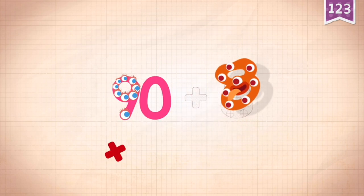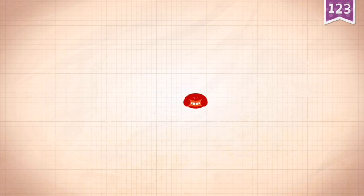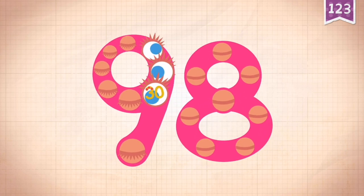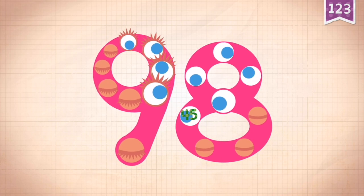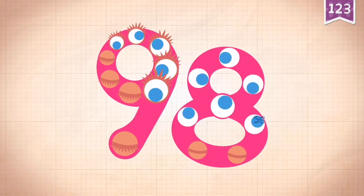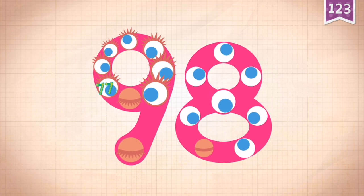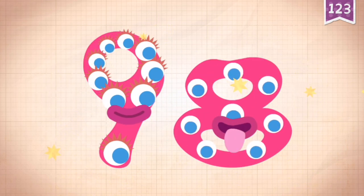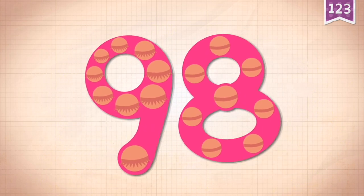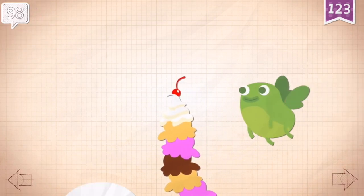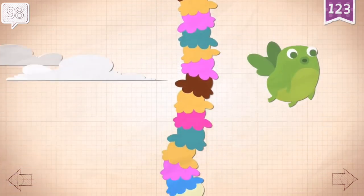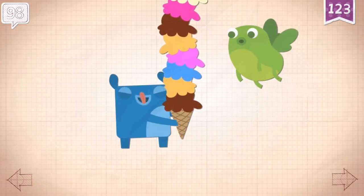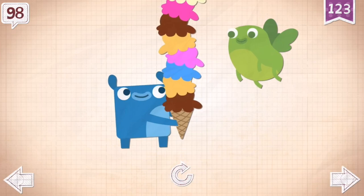90 plus 8 equals 98. Touch 10, 20, 30, then count by ones through the decades: 32, 33, 44, 45, 55, 56, 66, 67, 77, 78, 88, 98! Little Blue got an ice cream cone with 98 scoops!